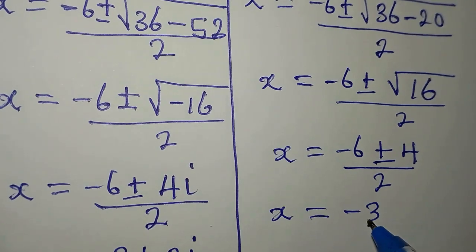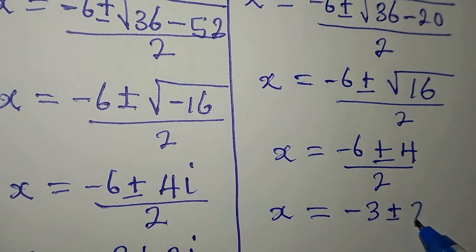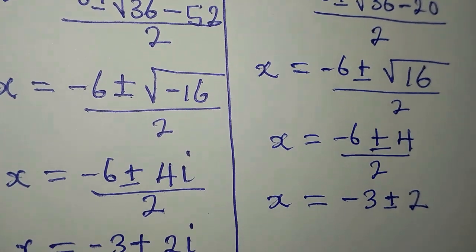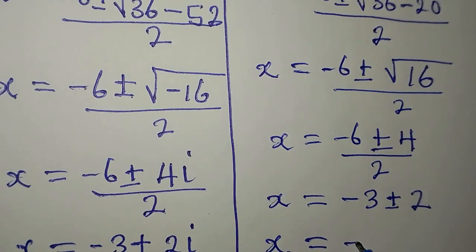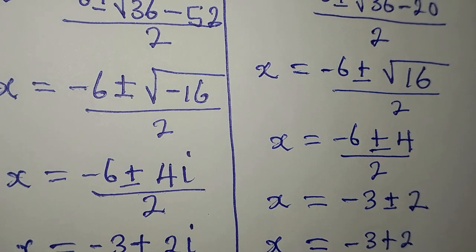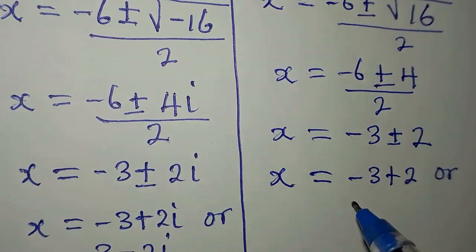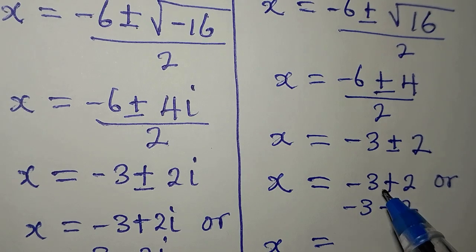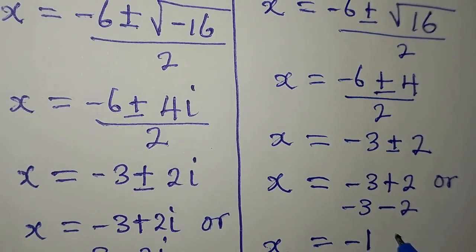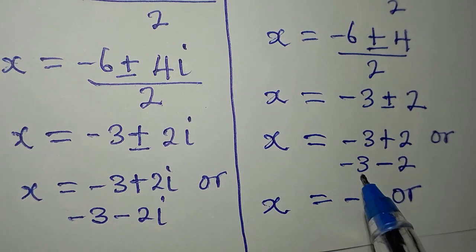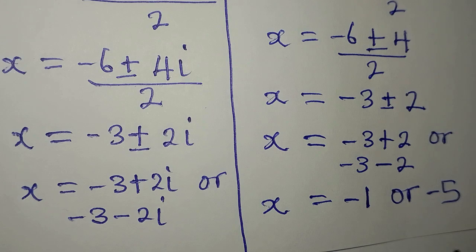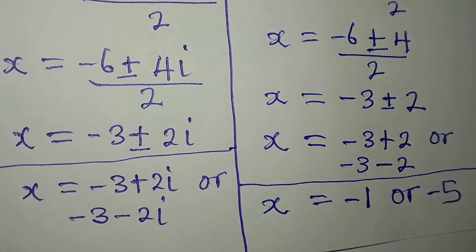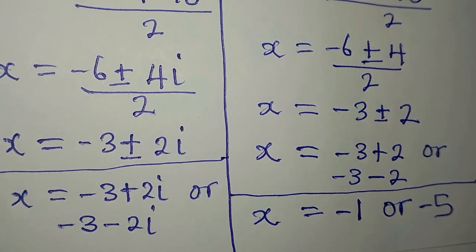Now 2 can go into both, so x is minus 3 plus or minus 2. We are saying x is equal to minus 3 plus 2, or minus 3 minus 2, which simplifies to x equals minus 1 or x equals minus 5. So from here we have two more solutions for the equation. Thank you for watching — if you enjoyed the method I used, then subscribe to my channel for more.